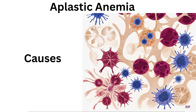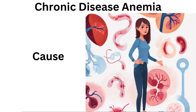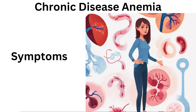Causes of aplastic anemia include idiopathic (unknown) causes, radiation, chemotherapy, exposure to toxins, or certain medications. Chronic disease anemia occurs when chronic conditions like chronic kidney disease, inflammatory disorders such as rheumatoid arthritis, or cancer lead to anemia as a secondary condition. Symptoms vary depending on the underlying illness but often include fatigue and weakness.